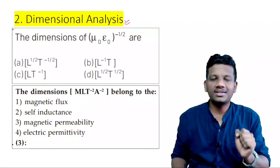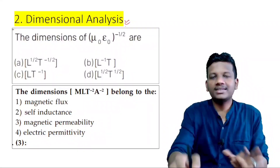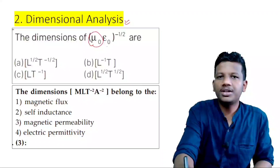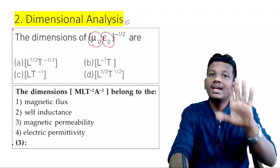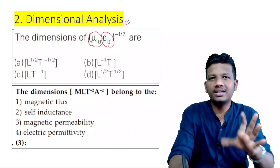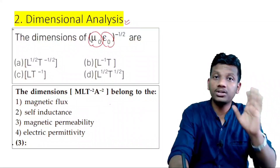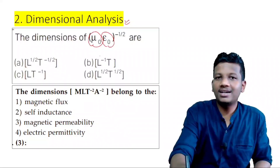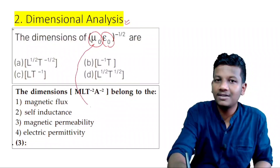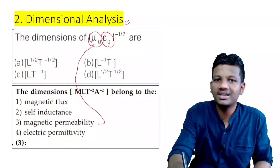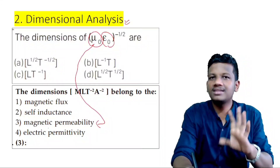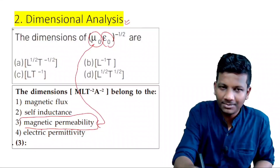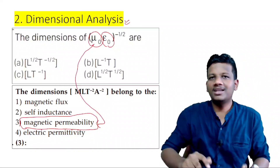Dimensional analysis — to my surprise, I have one example of magnetic permeability and electric permeability. It's a bit difficult but let's check the video. I have another question — this is the dimensional analysis of magnetic permeability. The dimension of magnetic permeability is what you will test.